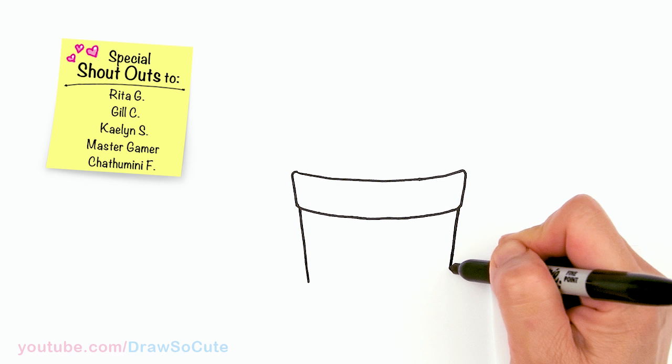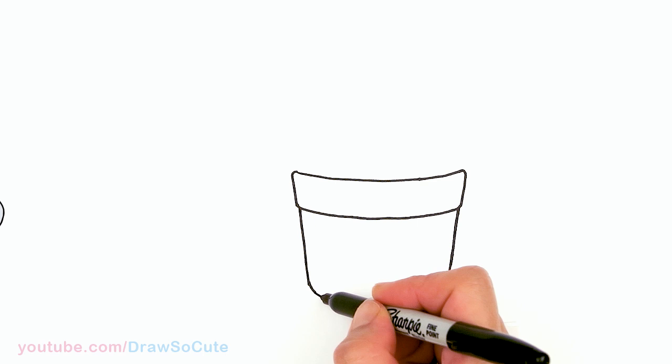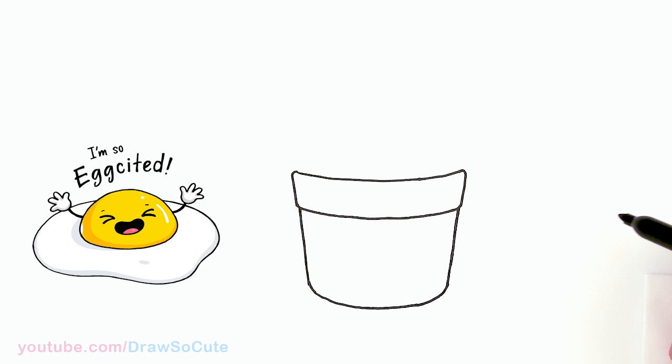About right here. So about the same level and I'm just going to round off the bottom again and then go ahead and connect it with a curve. There, nice and round.